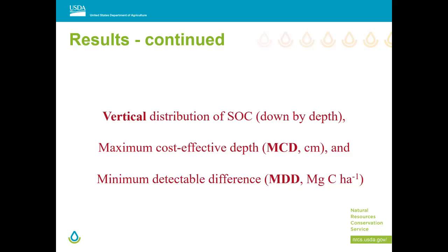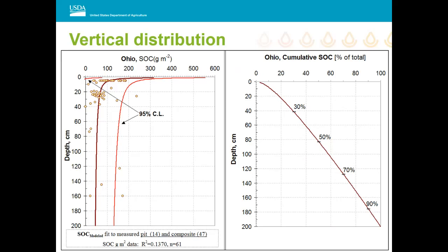Moving to the vertical distribution of soil organic carbon — addressing the maximum cost-effective depth and minimum detectable difference. These profile graphs help understand how far carbon accumulates down the soil profile. The graph to the right is more informative for answering where the carbon is. For the Ohio sites, one third of the organic carbon will be within the zero to 40 centimeter profile, two thirds down to 120 centimeters, but to account for all the carbon, we need to go down to two meters. But again — is that cost effective?